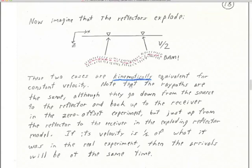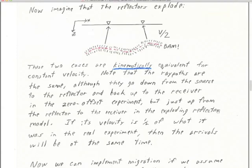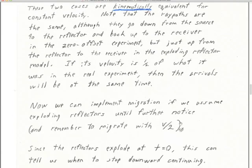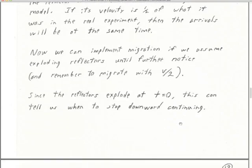These two cases are kinematically equivalent for constant velocity. We'll explore what can break this exploding reflector model later. The ray paths are the same — it's a single traverse instead of a double traverse. The wave does exactly the same thing traveling one way as it does traveling the other way. Once we know the path, it doesn't matter whether it's traveling up or down across the same path. That's how we concoct the exploding reflector model.